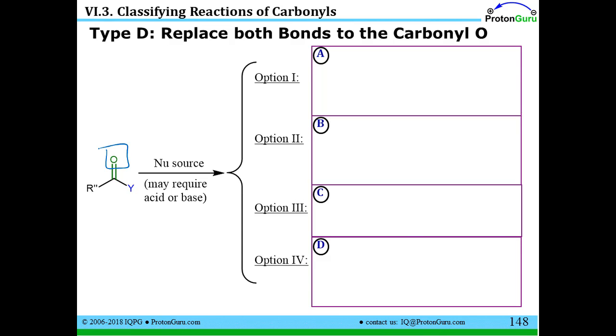Perhaps the most obvious way would be just to make two new single bonds to the carbon that lost its oxygen. All these reactions are taking nucleophiles and reacting with carbonyls. What if we were able to take two nucleophiles and stick them on there with single bonds? That will definitely work.